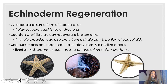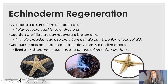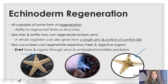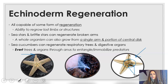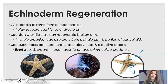Echinoderms are able to regenerate — they are all capable of some form of regeneration depending on the class. This is the ability to regrow lost limbs or structures. Sea stars and brittle stars are able to regenerate broken arms, and even if you just had one arm with part of the central disc, that arm could go on and grow four more arms along with the rest of the central disc. Sea cucumbers shoot out their organs and digestive glands as a defense, but they need them to continue digesting food, so they're able to regrow these organs as well.